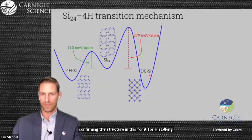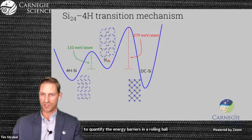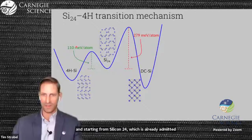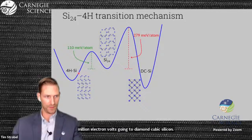With the assistance of ab initio calculations, we're able to quantify the energy barriers for why we see this transformation mechanism. Starting from silicon-24, we calculate an energy barrier of 110 millielectron volts per atom compared to 279 millielectron volts going to diamond cubic silicon. Clearly, we can see that it's easier to go to the 4H structure.